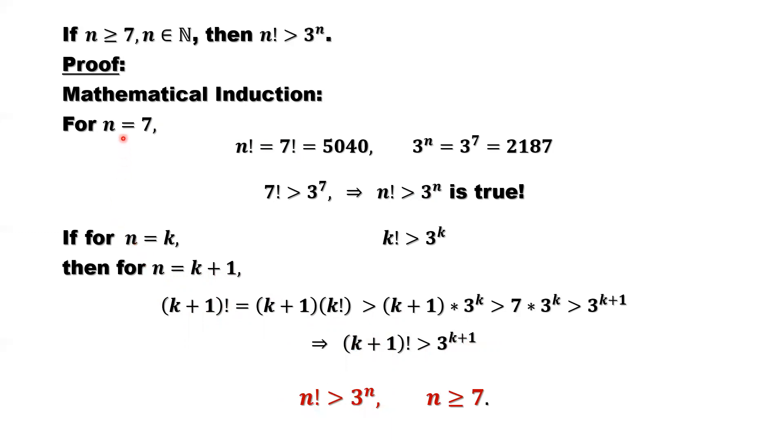From step 1 and step 2, both are true. We conclude this result. In general, it is true. That means when n is bigger than or equal to 7, n is a positive integer, then we have n factorial is bigger than 3 to the power n.